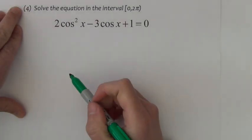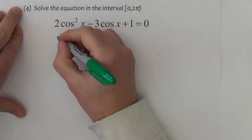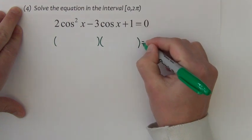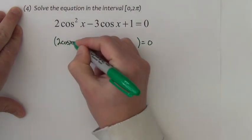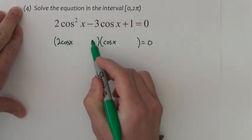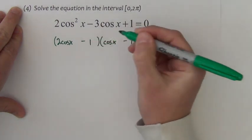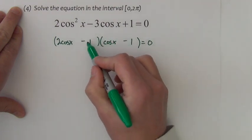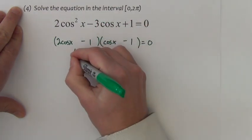This last trig equation to solve is just your standard quadratic trinomial. I'm going to set up some binomial factors. We would have 2 cosine x times cosine x to get 2 cosine squared. If I go with minus 1 minus 1, they multiply to positive 1 and the outside inside would add to the negative 3 that we want.